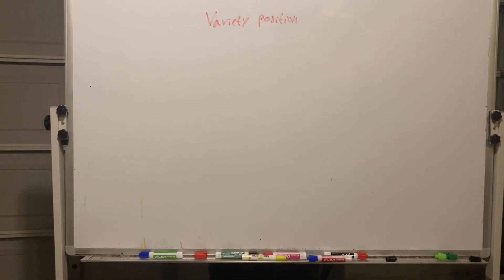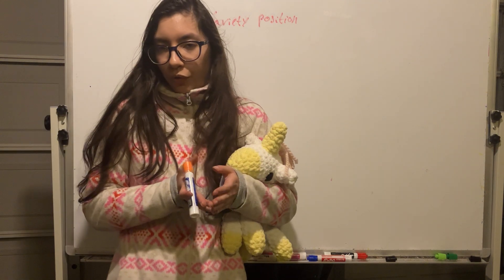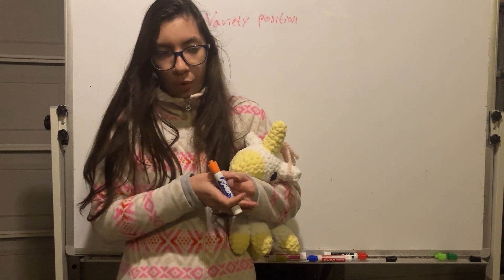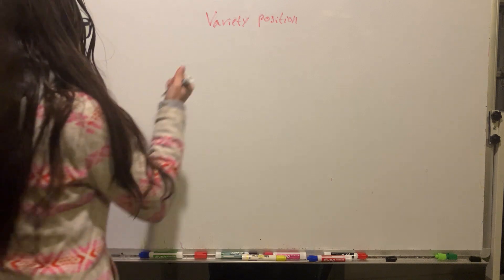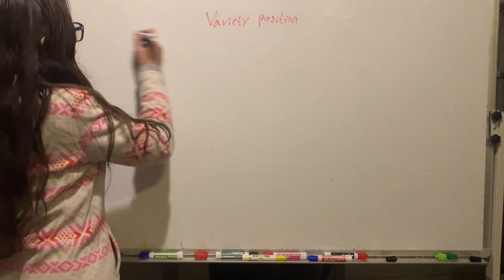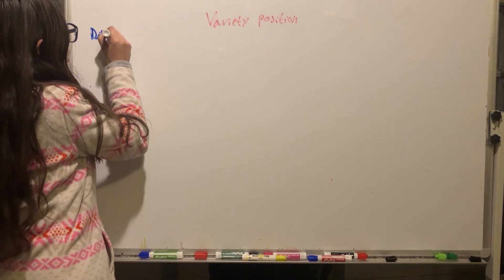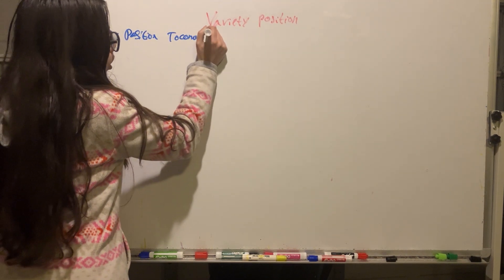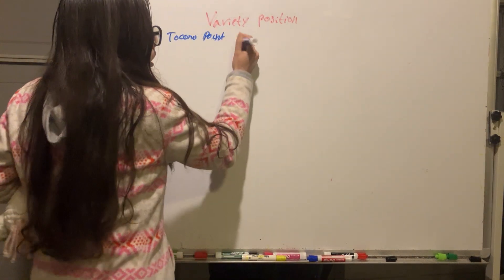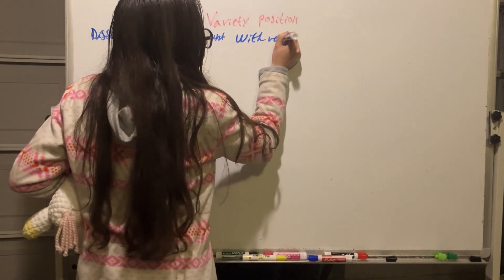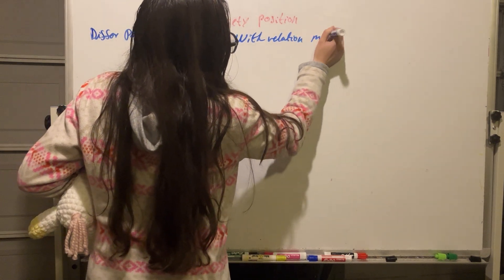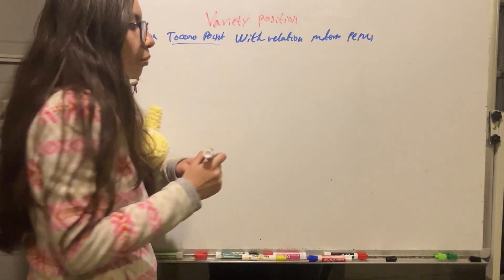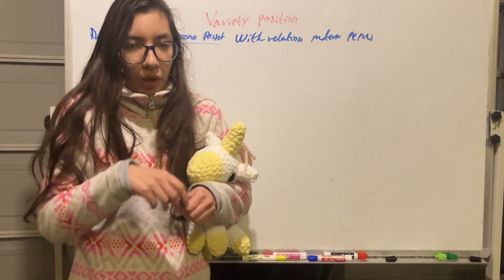Now let's see normal versus abnormal variety of position of the tokenomic point entering through the pelvis during labor. In the previous video, we defined the variety of position as the different positions that the tokenomic point can have in relation to the maternal pelvis. The tokenomic point is a specific arbitrary point of the presenting part of the fetus.